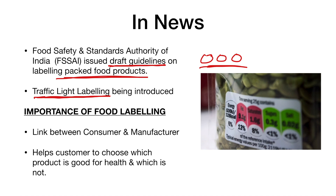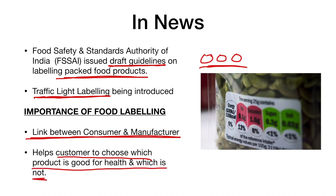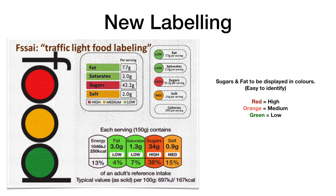It is important to label food products because it works as a link between the consumer and the manufacturer, and it makes it easy for the customer to choose which product is good for health. The traffic light labeling uses three different colors: red, yellow or orange, and green.